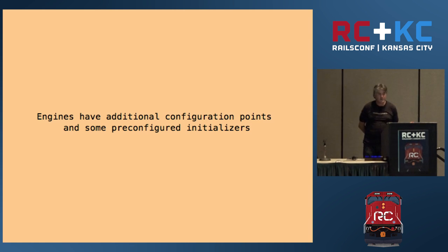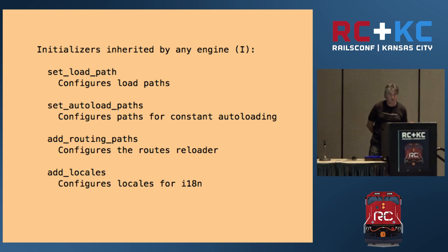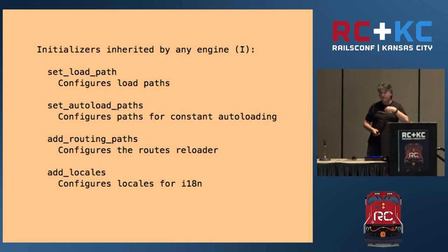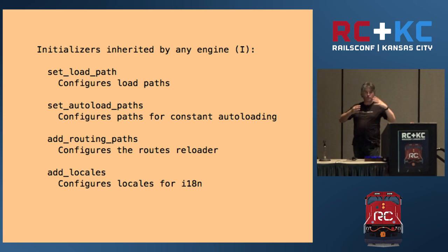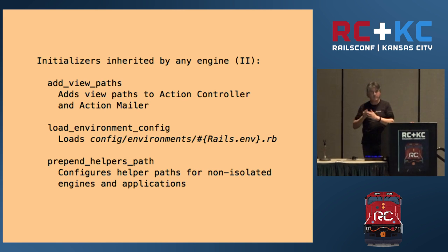Engines have predefined configuration points and initializers. Just by subclassing Engine, you get some configuration and initializers to start with. When you define an engine by subclassing Rails::Engine, you inherit things like: setting the load path of the engine, adding your lib directory or app/models to the load path, autoload paths, routing paths, locales, and a number of other things.